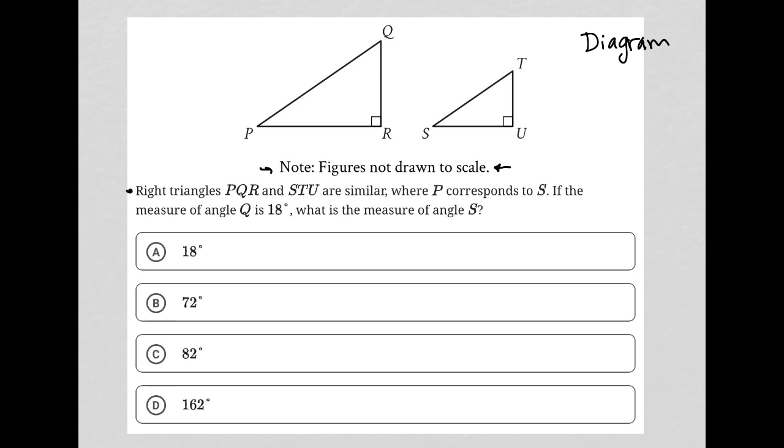The information provided says right triangles PQR and STU are similar. That's a very important word. Similar triangles means that each of the corresponding angles are congruent. We already know that angle R is congruent to angle U because they're both 90 degrees. But what we should also know is that angle P is congruent to angle S. They have the same exact value, and angle Q is congruent to angle T. That's what the similarity means here.